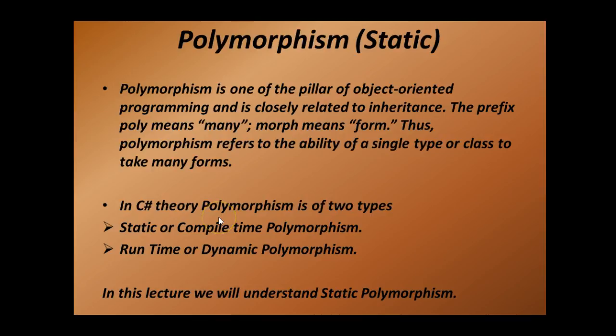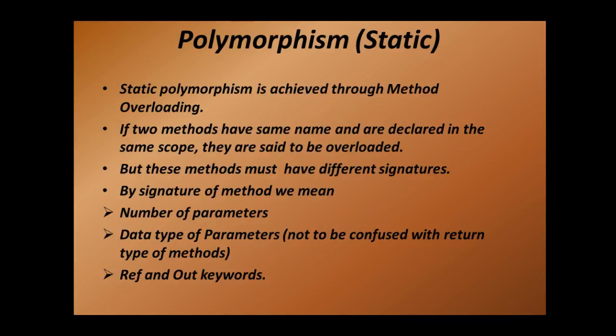In this lecture we will understand static polymorphism. Static polymorphism is also known as compile time polymorphism and it is achieved through method overloading. So if two methods have the same name and are declared in the same scope they are said to be overloaded, provided they have different signatures. Now what do we mean by the signature of a method?